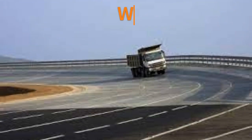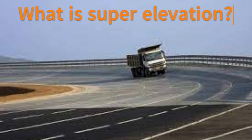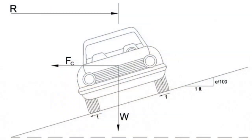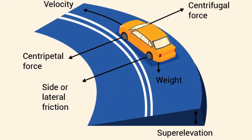Question 2: What is superelevation? Answer: Superelevation is the transverse slope provided to counteract the effect of centrifugal force and reduce the tendency of a vehicle to overturn and to skid laterally outwards, by raising the pavement outer edge with respect to the inner edge.